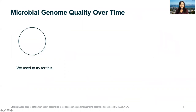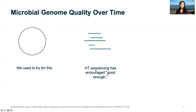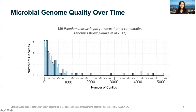For context, way back when we only had Sanger reads and started trying to assemble microbial genomes, people aimed for a single perfect chromosome. But with high throughput sequencing, we've kind of gotten to good enough assemblies — they're not complete, but you can see the gene content. And with metagenomes, it's pretty difficult to assemble complete genomes because of the sample complexity.